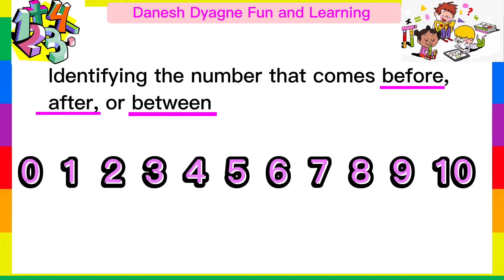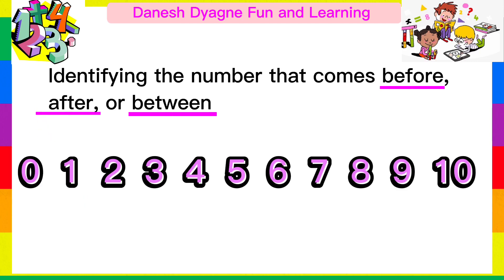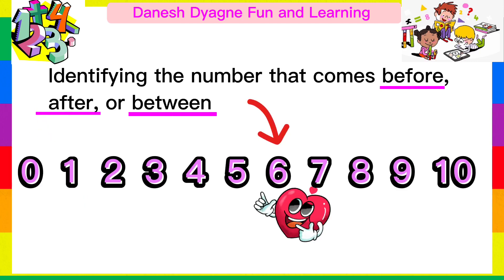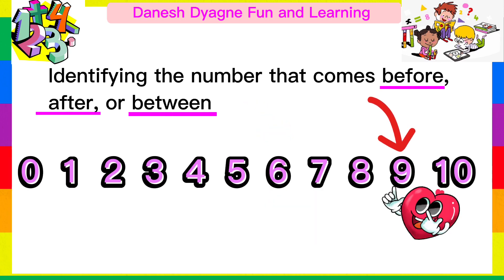Now, let's observe the number sequence. The number 0 comes before 1. The number 6 comes after 5. The number 9 is found between 8 and 10.